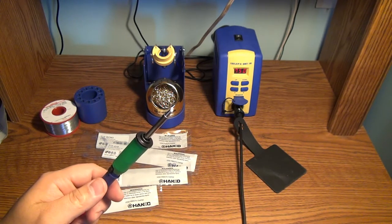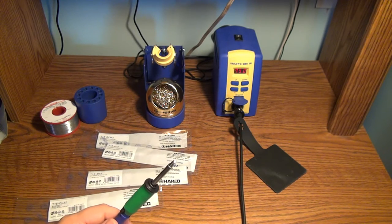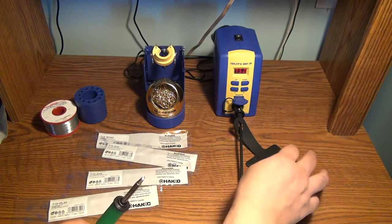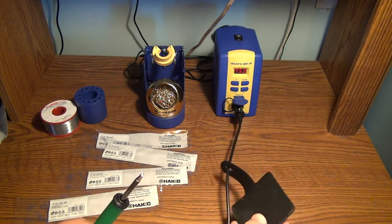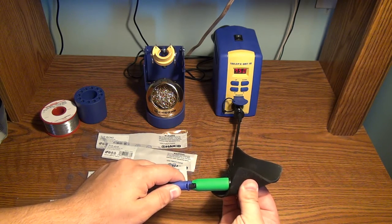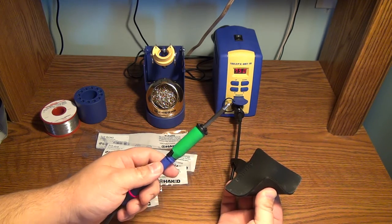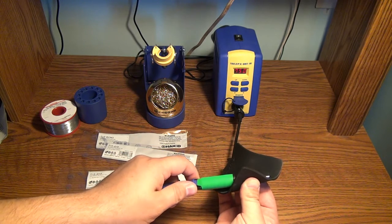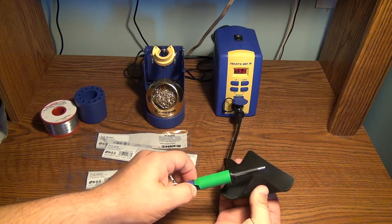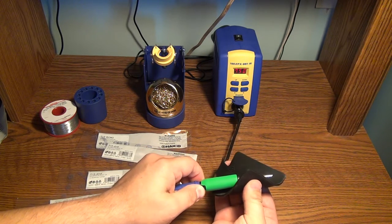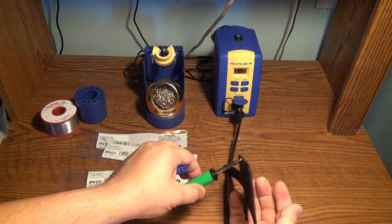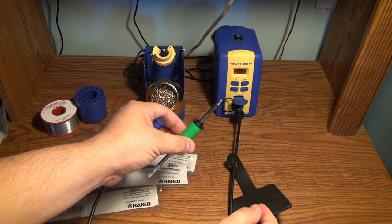So unlike the JBC which had the quick change tip setup, what the Hakko does is it comes with this silicone pad. The silicone pad is meant so you can grab the tip to be able to change it without burning yourself. So the tips on this are also hot swappable.